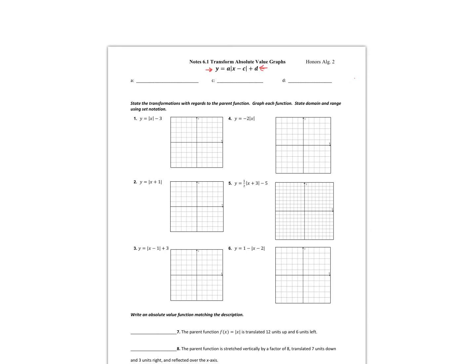Let's break this down. Any value in the a slot means it's a vertical stretch or shrink. If that a value is greater than 1, it's stretching the graph. If a is between 0 and 1 — meaning it's a decimal or a fraction — it's going to shrink it. Now d is going to move the graph up or down — we call it a vertical shift. If it's positive, the graph goes up; if it's negative, it goes down.